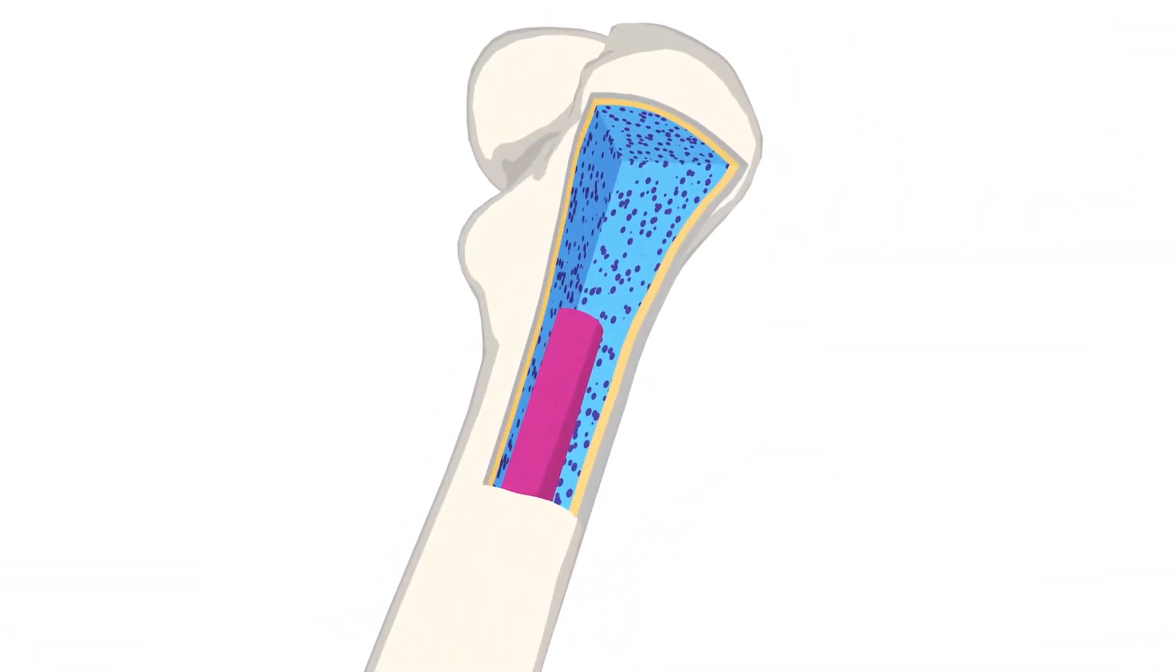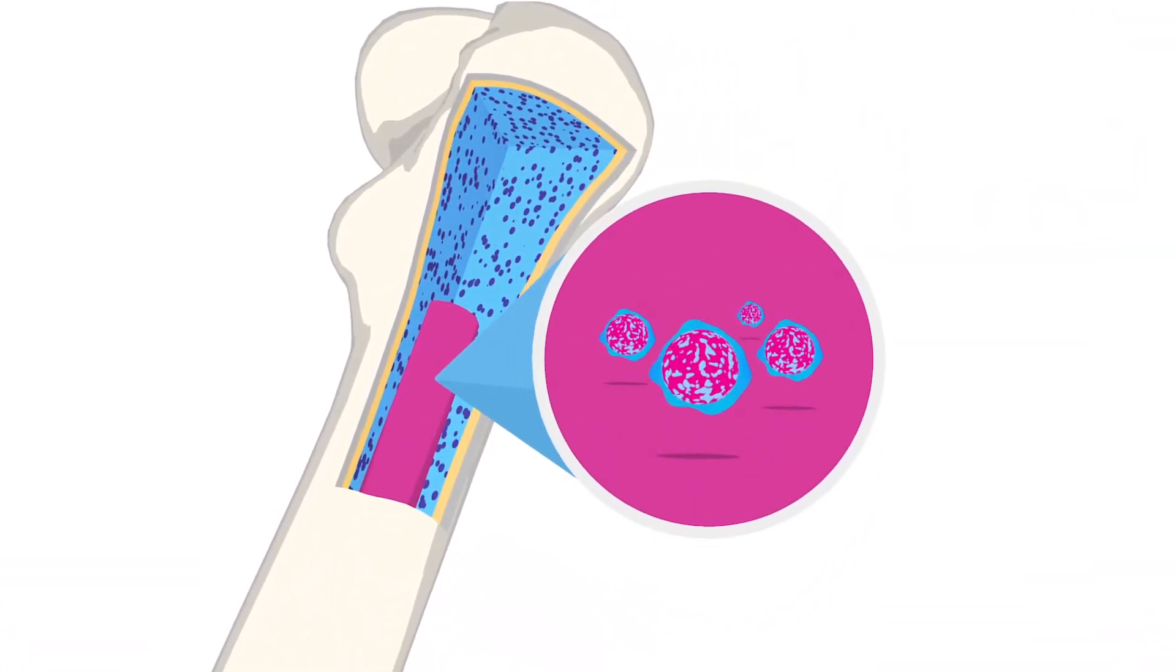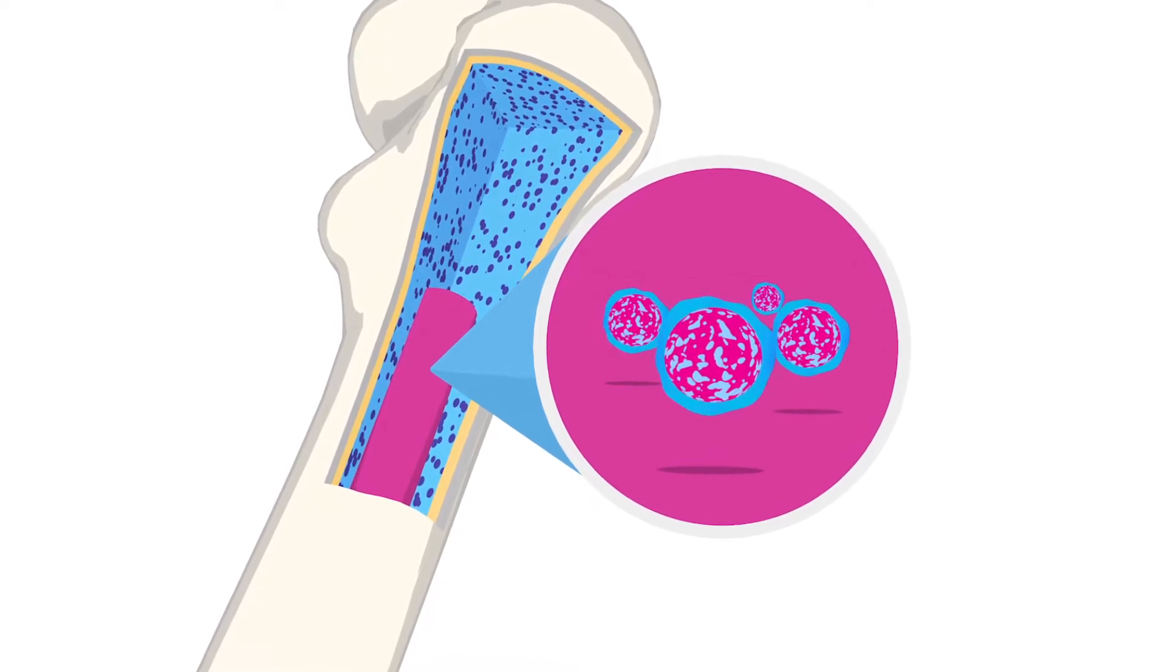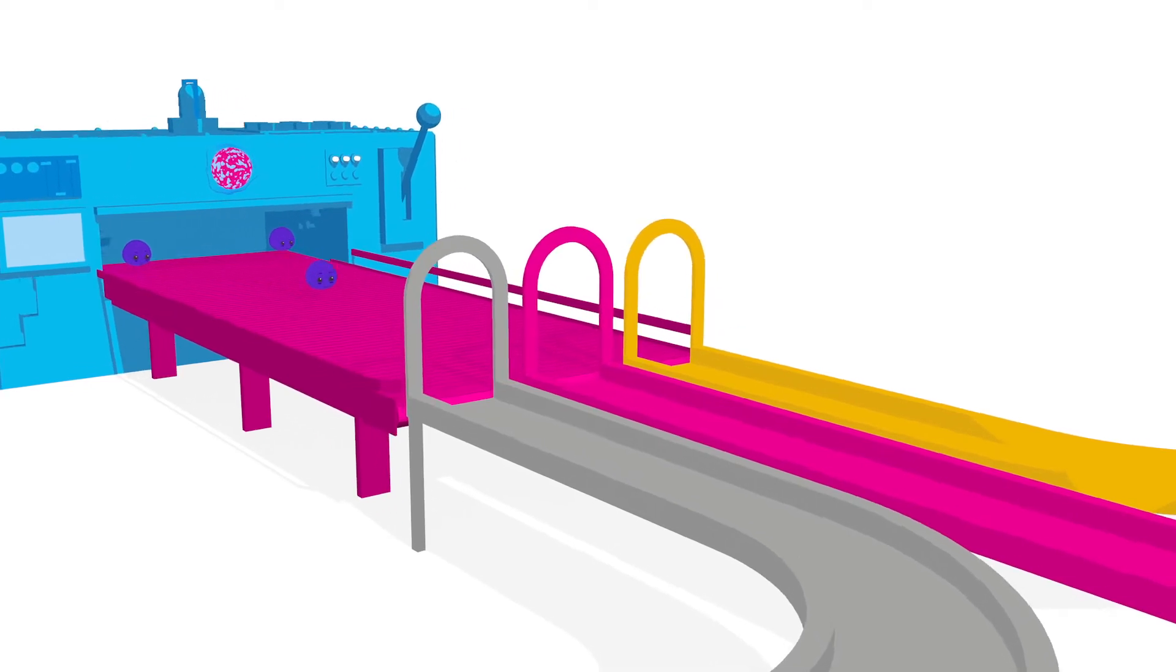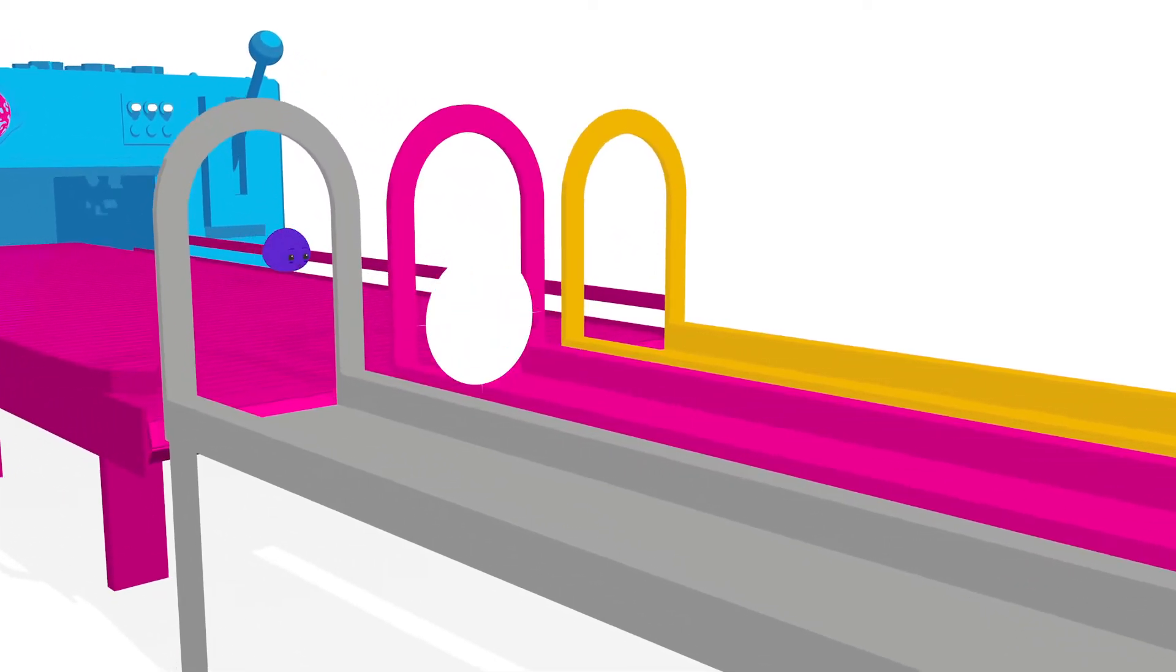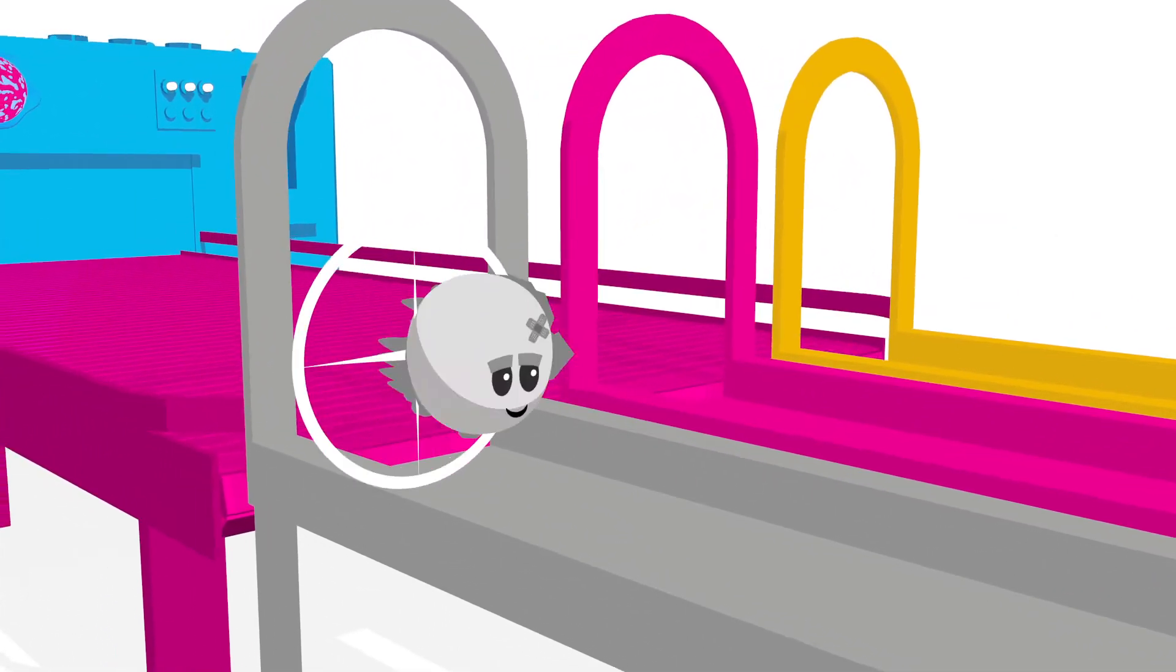Inside our bones is bone marrow, and it's where blood cells are formed from special cells called stem cells. Normally these blood factories pump out immature cells, which then mature into fully-fledged red blood cells, white blood cells or platelets.